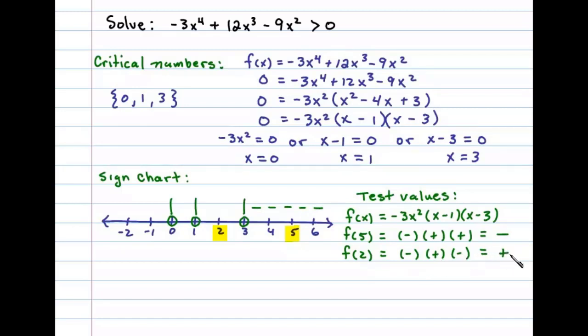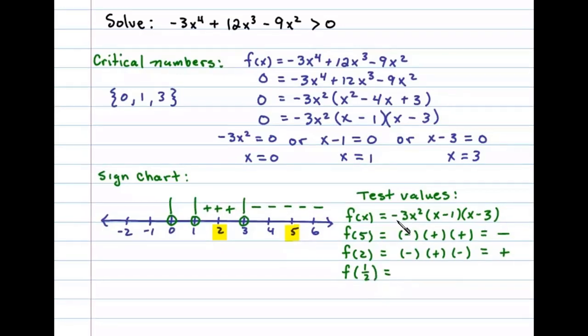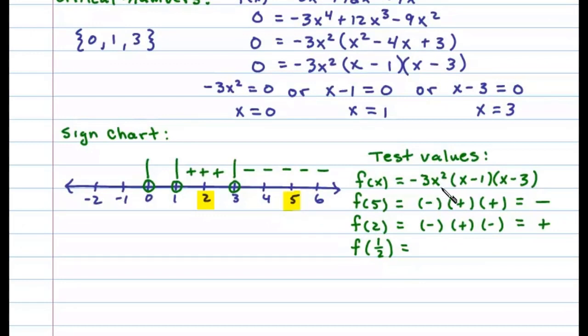Now choosing a number between 0 and 1, say 1/2, we'll test that. f(1/2): we have -3 times (1/2)² will be negative. 1/2 - 1 is negative, and 1/2 - 3 is negative. Multiplying 3 negatives results in a negative number.